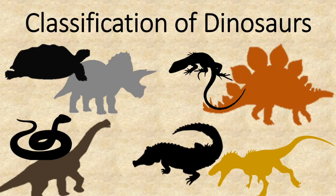Before we start looking at dinosaur classification, let's find out where dinosaurs fall in the classification of all living things. Dinosaurs are classified as reptiles because when they were first discovered, it was believed they shared the same features as reptiles — cold-blooded, with scales and laying eggs with a protective shell. Worth noting is that another living thing that falls into this group is birds, but more about that later.